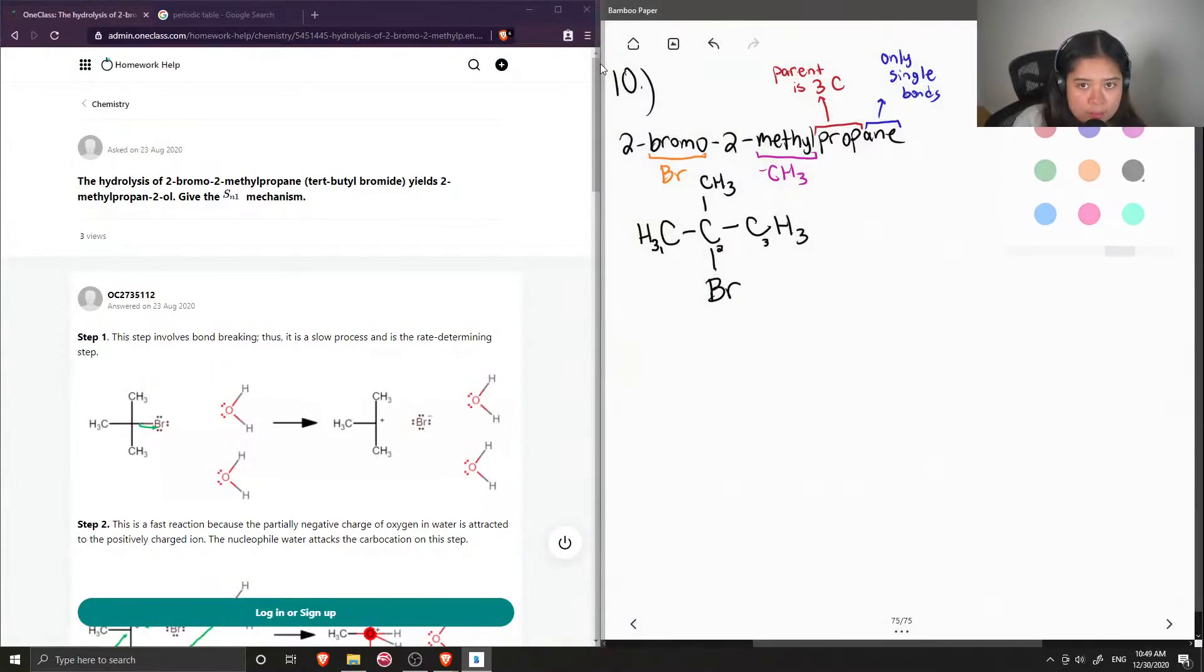Okay, so let me erase the numbers. Okay, so this is 2-bromo-2-methylpropane. So we need to write out the SN1 mechanism. So when we have an SN1 mechanism, it's typically like a two-step reaction.